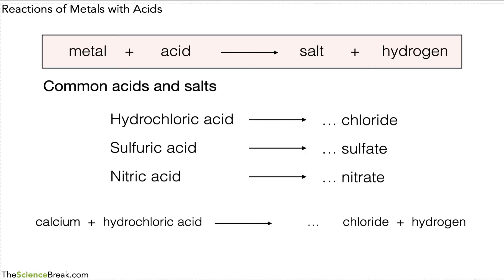What exactly is the name of the salt? Well, we can take the calcium from our reactants, the things that are reacting, and that becomes part of the salt. So we have calcium chloride plus hydrogen.